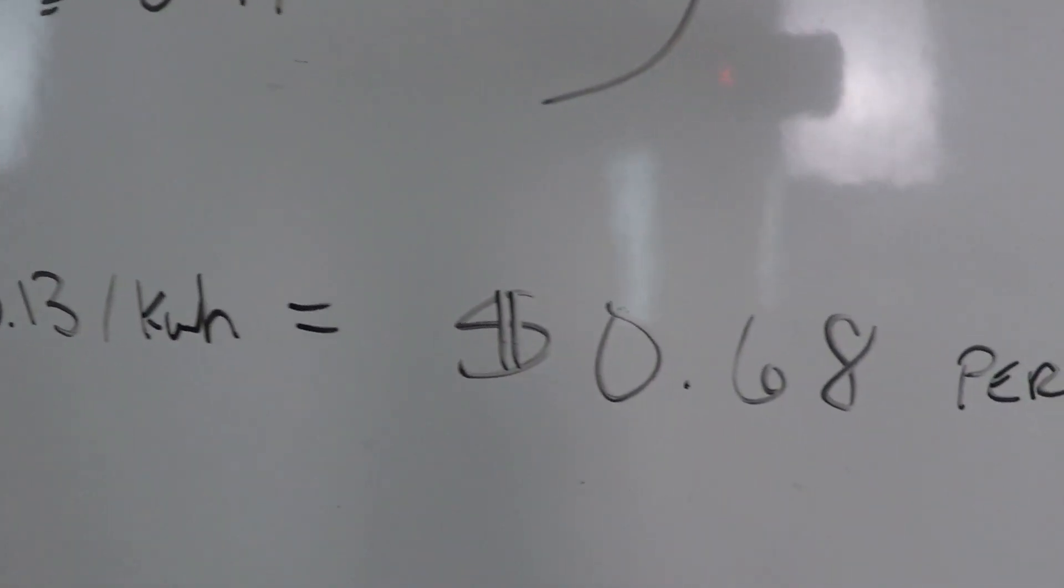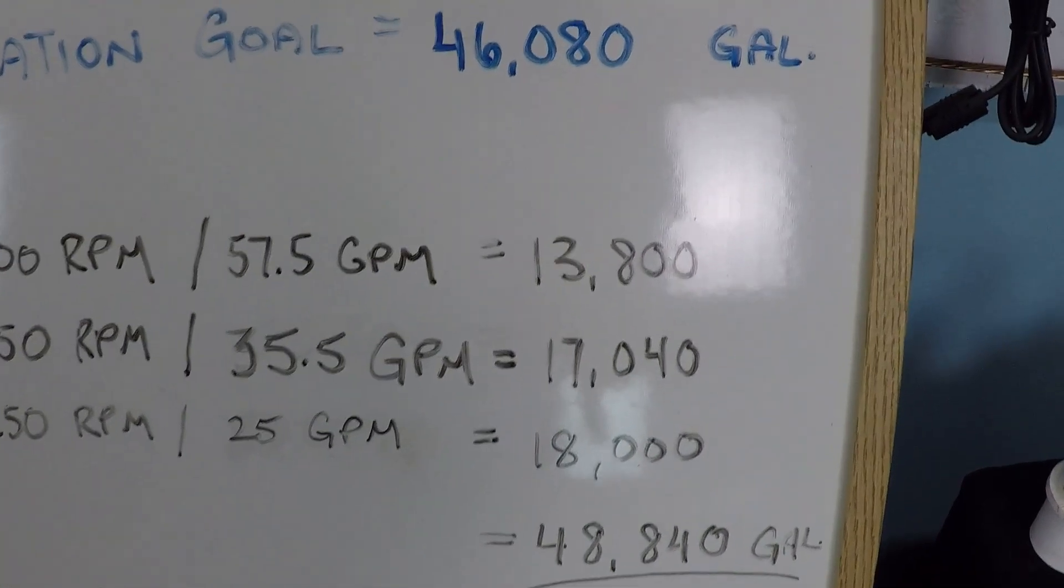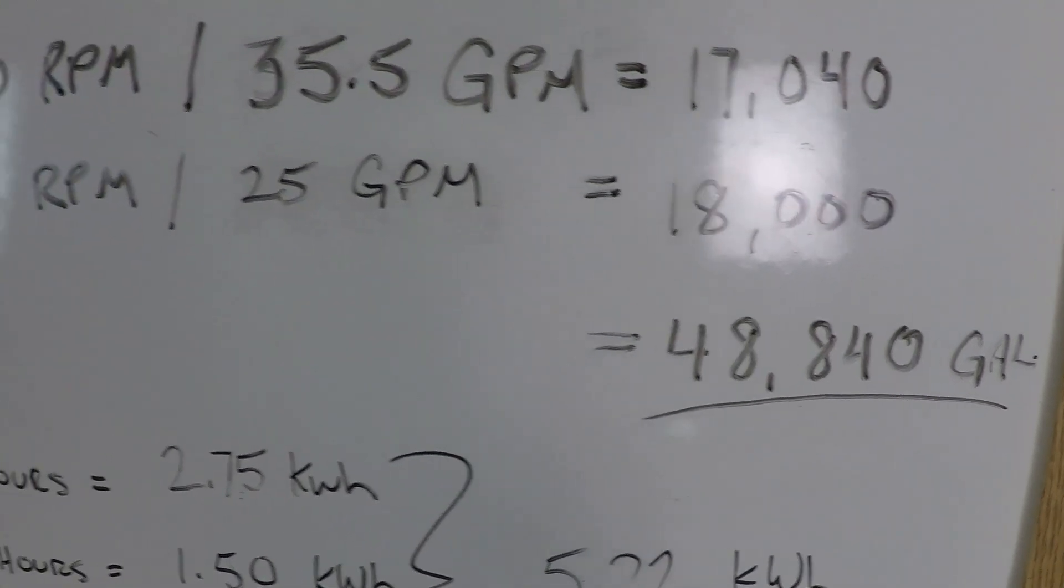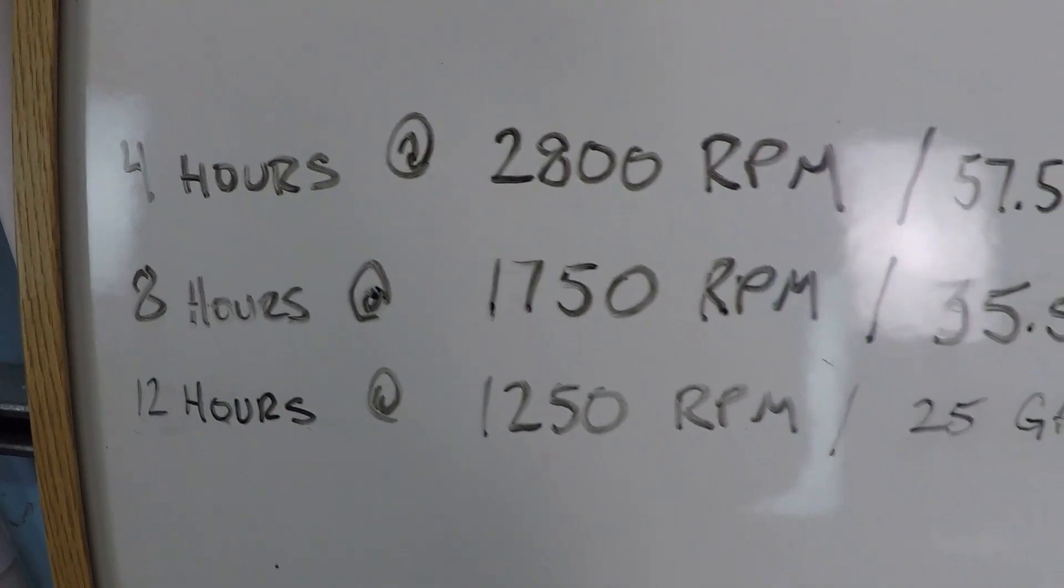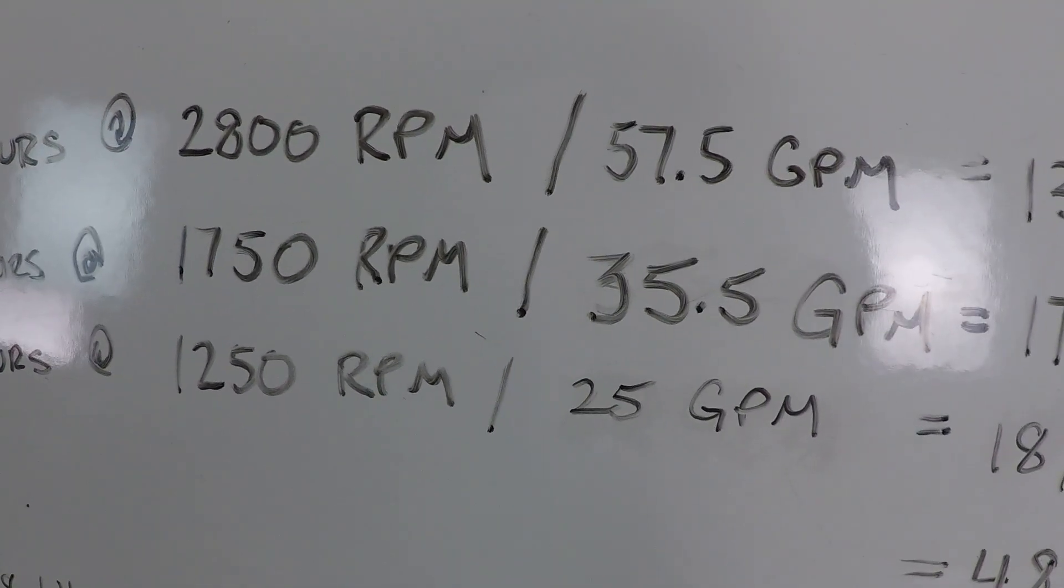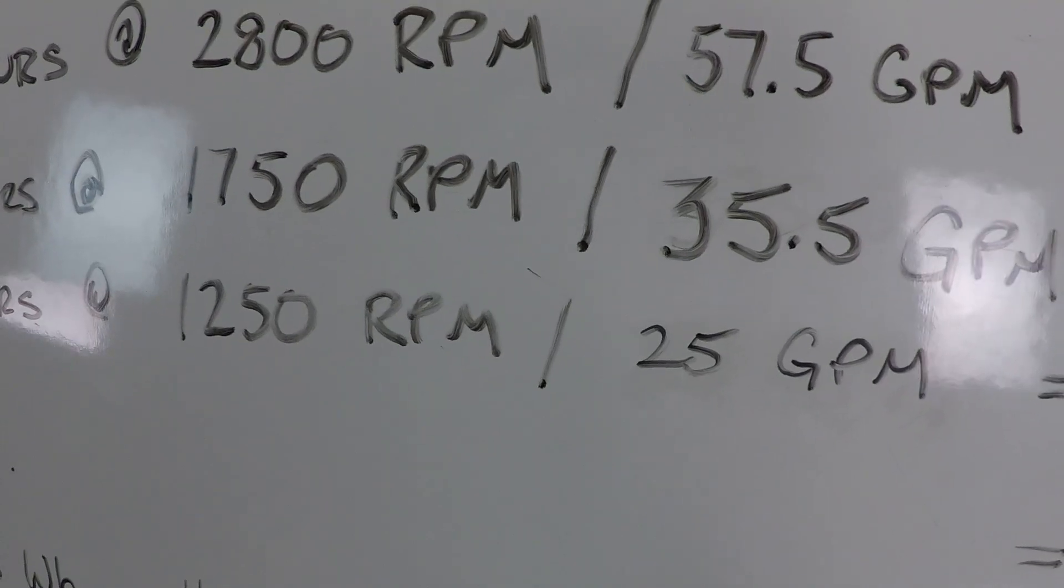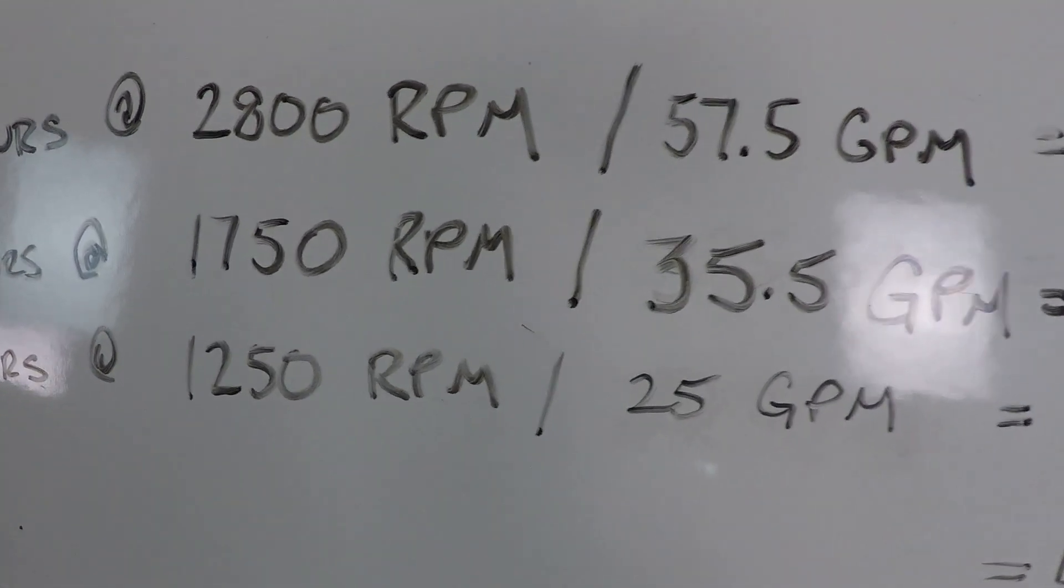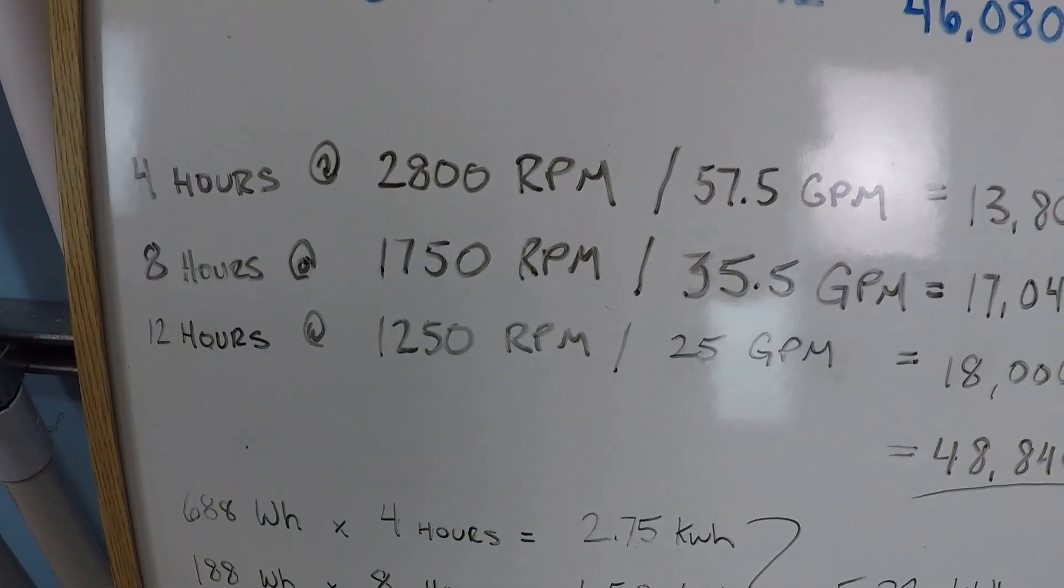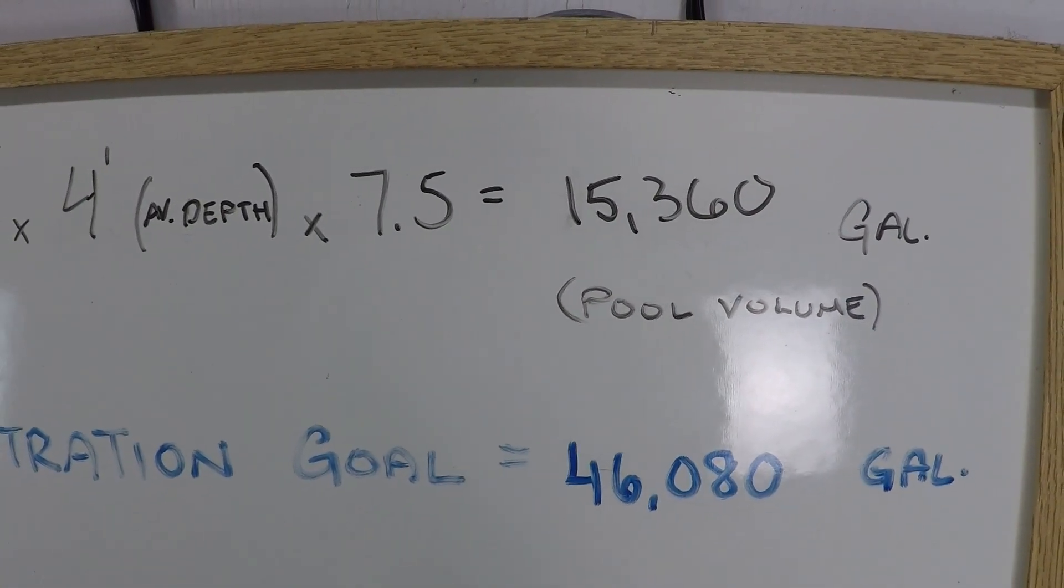So the nationwide average for kilowatt hours is 13 cents per kilowatt hour of power, so this pump on this filtration schedule would be about 68 cents per day and that's actually pretty impressive considering we're actually exceeding our 46,000 gallon filtration goal, 48,840 gallons with a fairly dynamic schedule. And our minimum flow rates are actually pretty high, you know our lowest was 25 gallons per minute and if you had say a salt water chlorinator almost all of the salt water chlorinators on the market will actually turn on at 25 gallons per minute or some of them even less, some of them as low as 15. But I think almost all of them operate at 25 as the minimum so if you use a salt water chlorinator this would actually be a pretty good schedule where you've got periods of time at low medium and high speeds and we're meeting and exceeding our filtration goal of three times the volume of the pool every 24 hours.